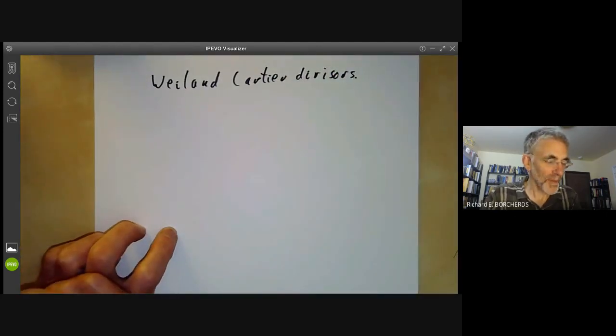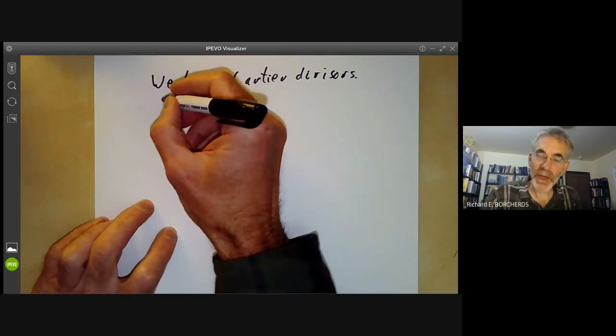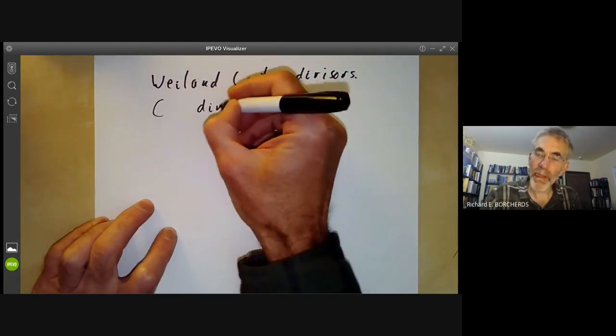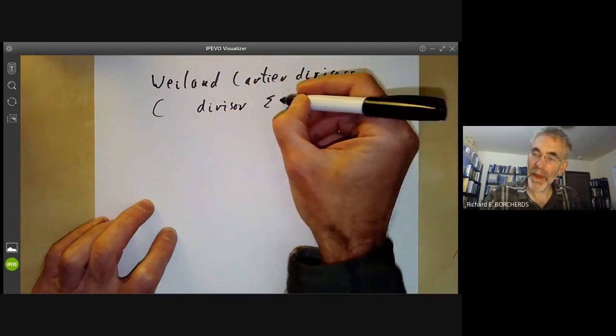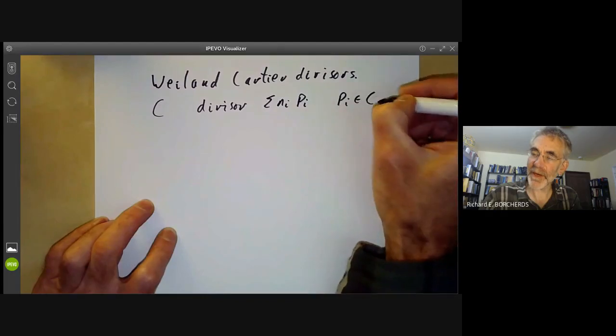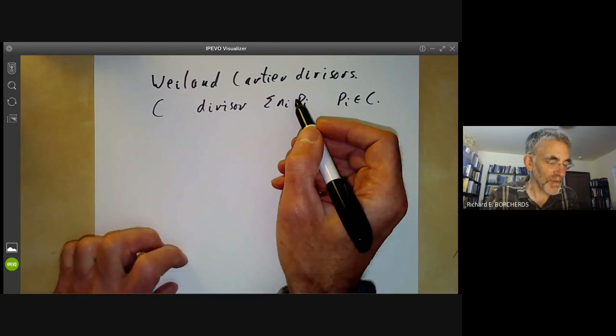We saw last lecture that if we've got a curve C over the complex numbers, then a divisor is a formal sum n_i p_i of points p_i in C. In other words, you just take the points of C as the basis for a free abelian group.